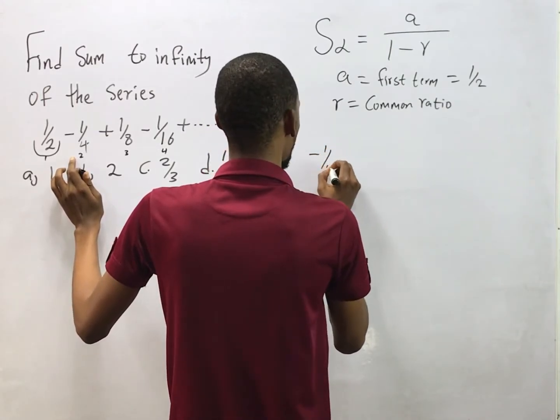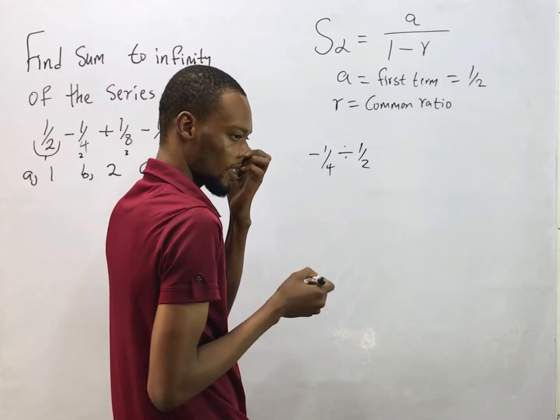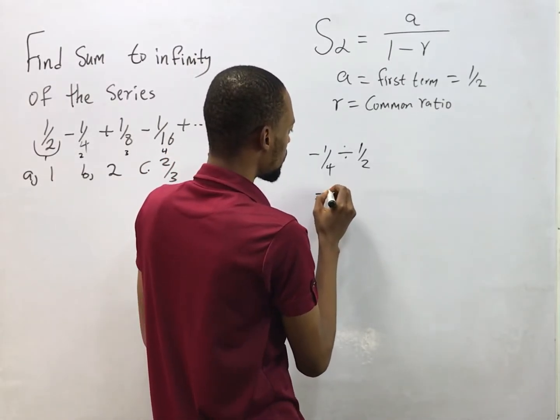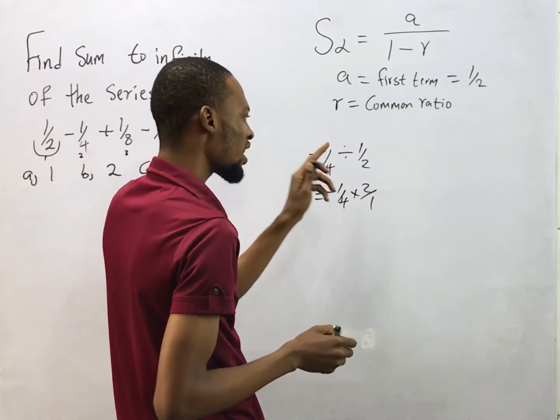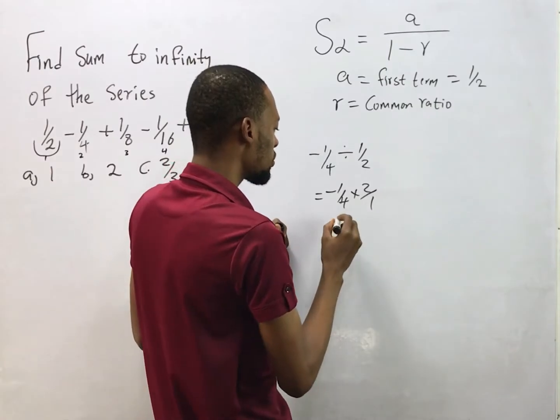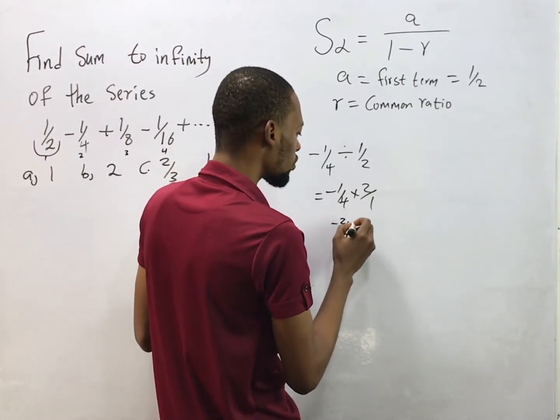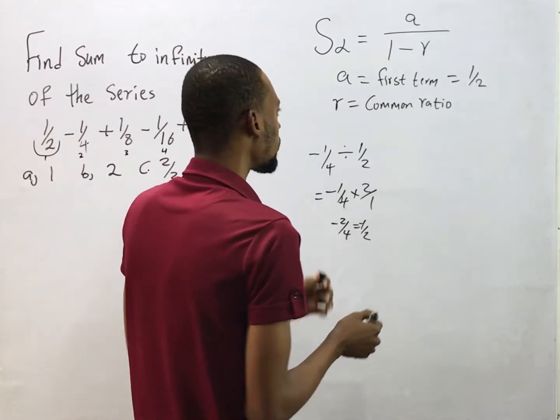For example, if I pick the second term which is -1/4 divided by 1/2, the answer is simply -1/4 times 2/1. When you are changing division to multiplication, you simply inverse the other number. This will give you -2/4 which is -1/2. So my common ratio is -1/2.